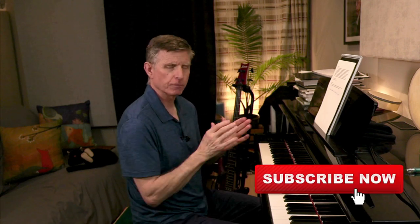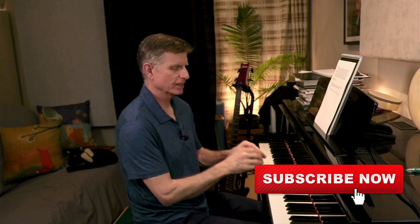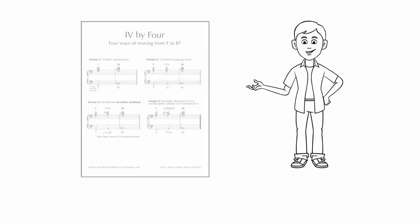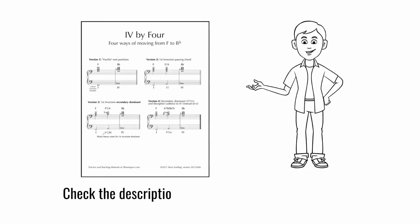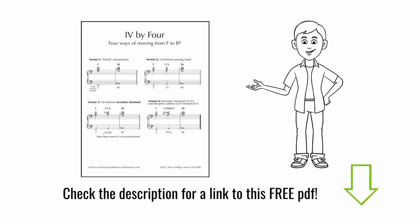There you go — four simple ways to move from the I chord to the IV chord. That happens a lot in music. Check the description for a free PDF of today's lesson. Make sure to like, subscribe, follow, and share. Check the description below for a link to this PDF 4x4 — that's four ways of moving from the I chord to the IV chord. It's great for lots of different styles and it works in any key; just swap out the chord names. Thanks for watching and happy practicing. I'll see you soon.